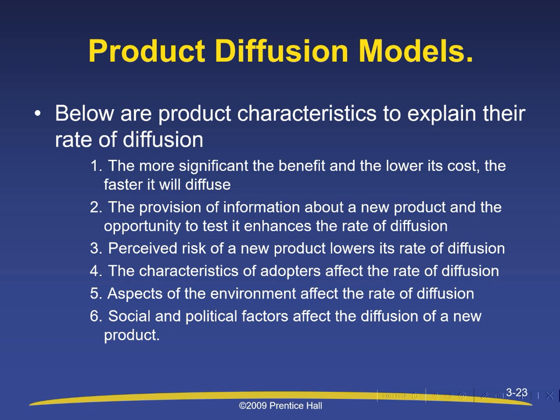Product diffusion models: product characteristics that explain their rate of diffusion include: the more significant the benefit and the lower the cost, the faster it will diffuse; providing information about a new product and the opportunity to test it enhances the rate of diffusion; perceived risk lowers the rate of diffusion; the characteristics of adopters affect the rate of diffusion; aspects of the environment affect the rate of diffusion; and social and political factors also affect diffusion.